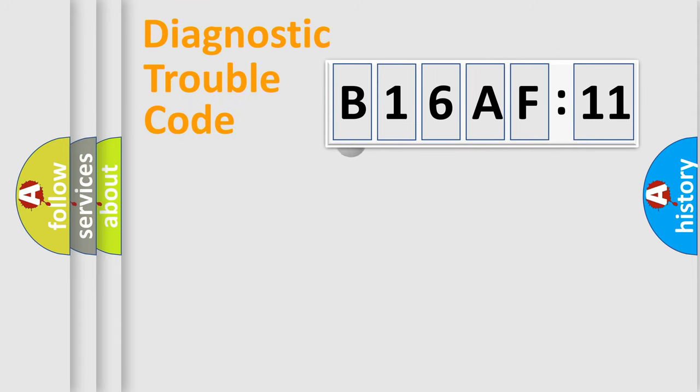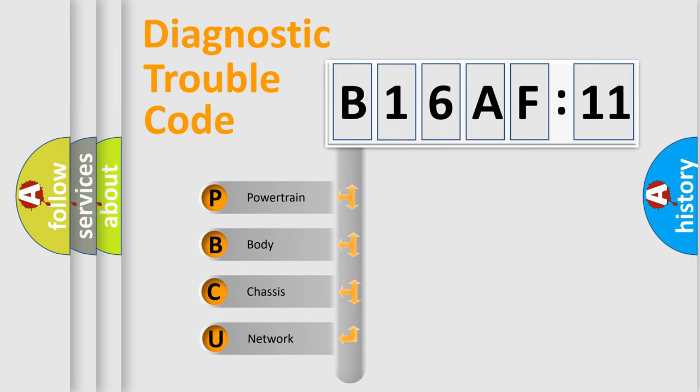First, let's look at the history of diagnostic fault code composition according to the OBD2 protocol, which is unified for all automakers since 2000. We divide the electric system of the automobile into four basic units.